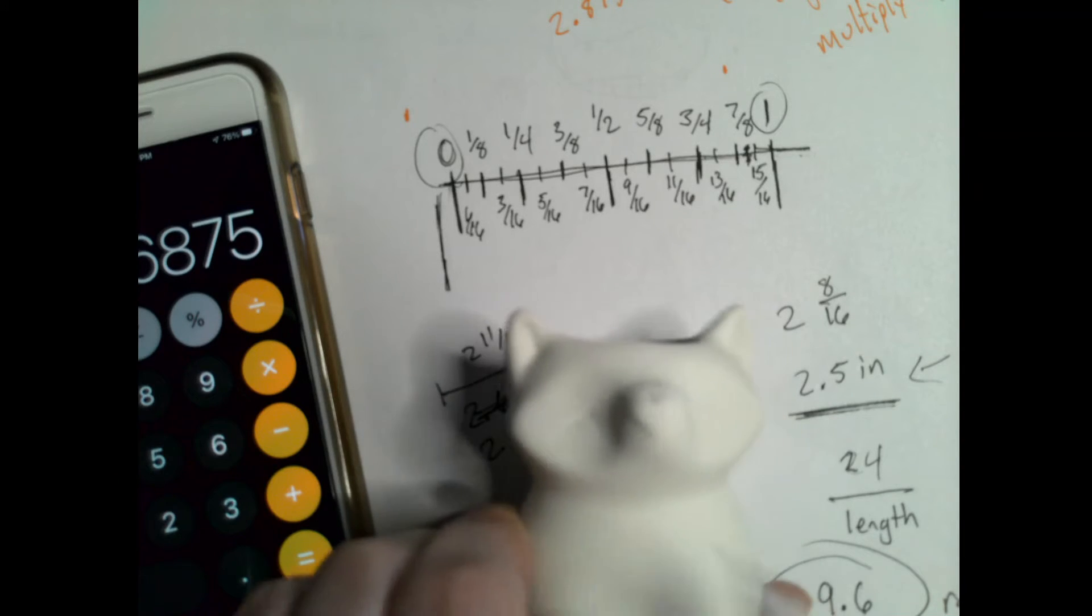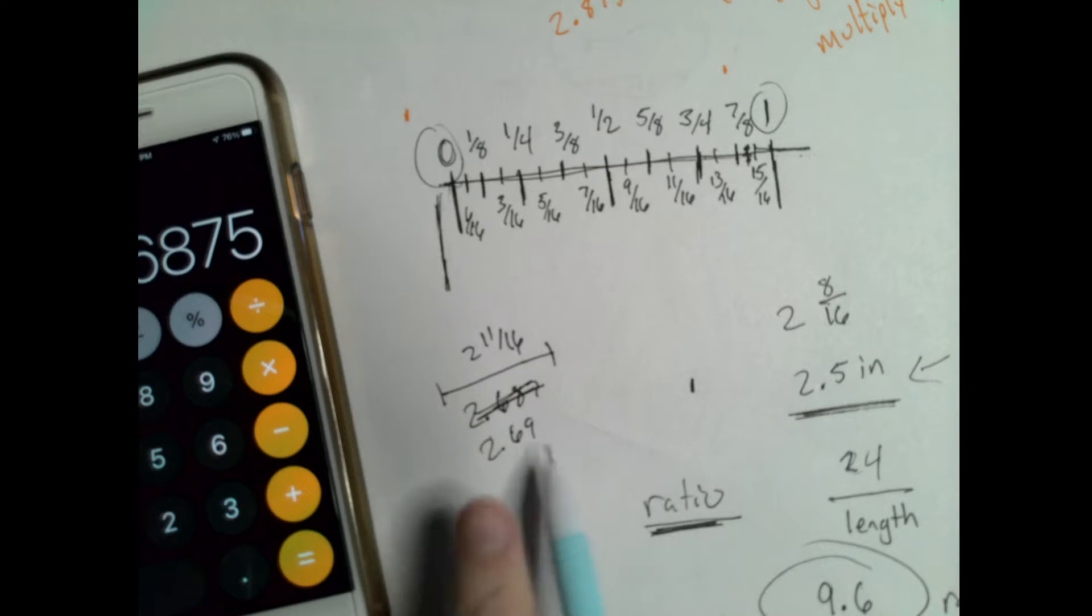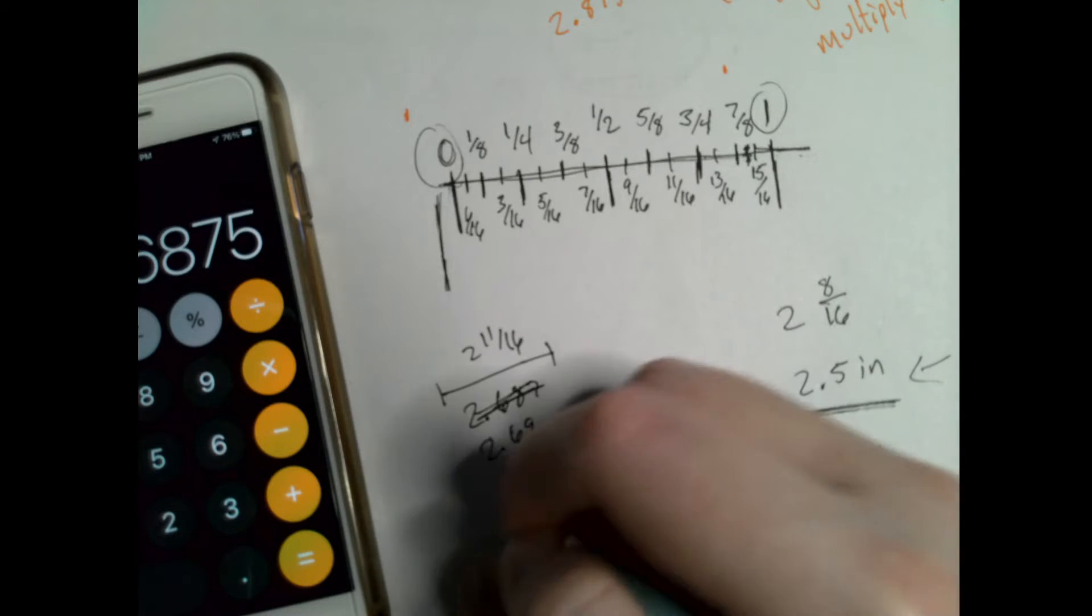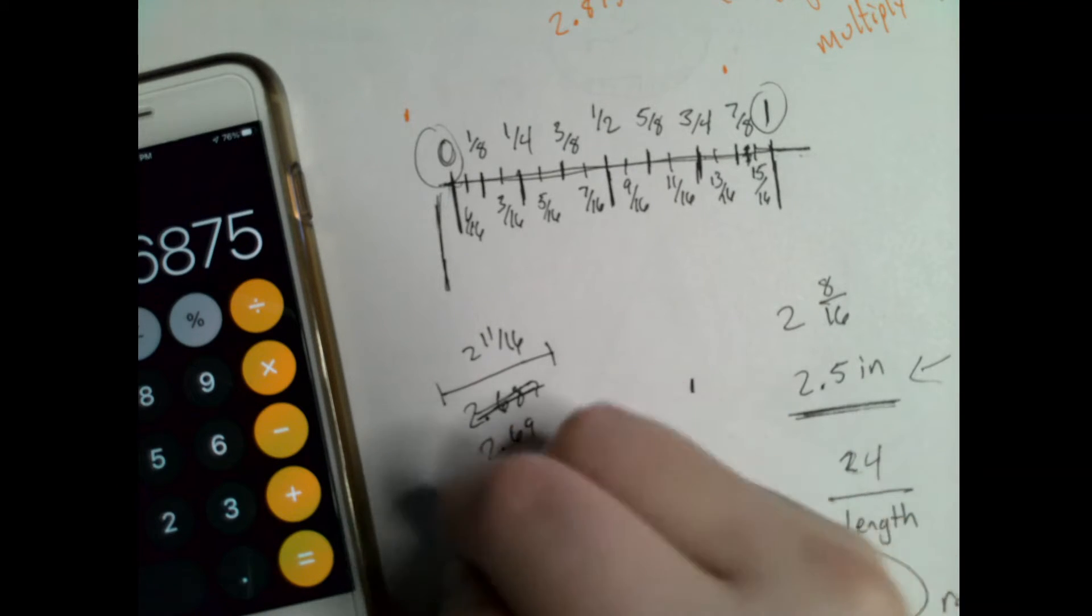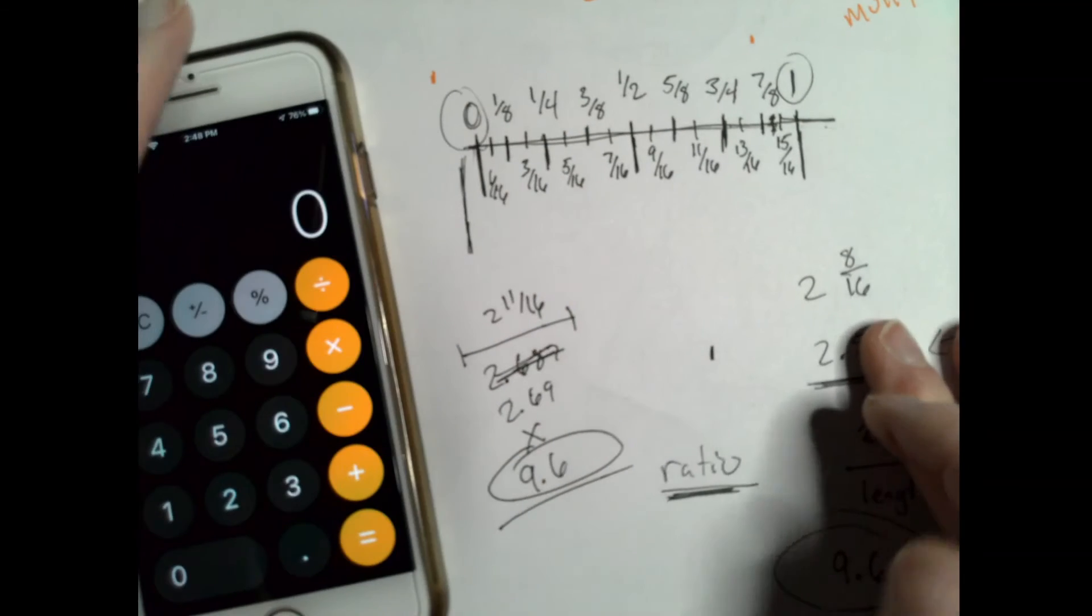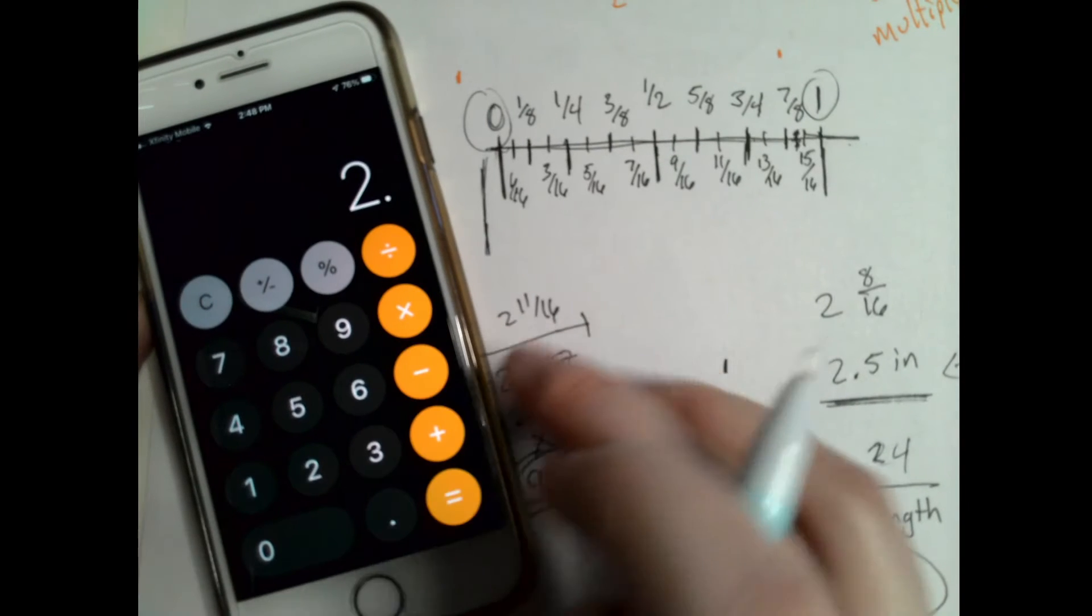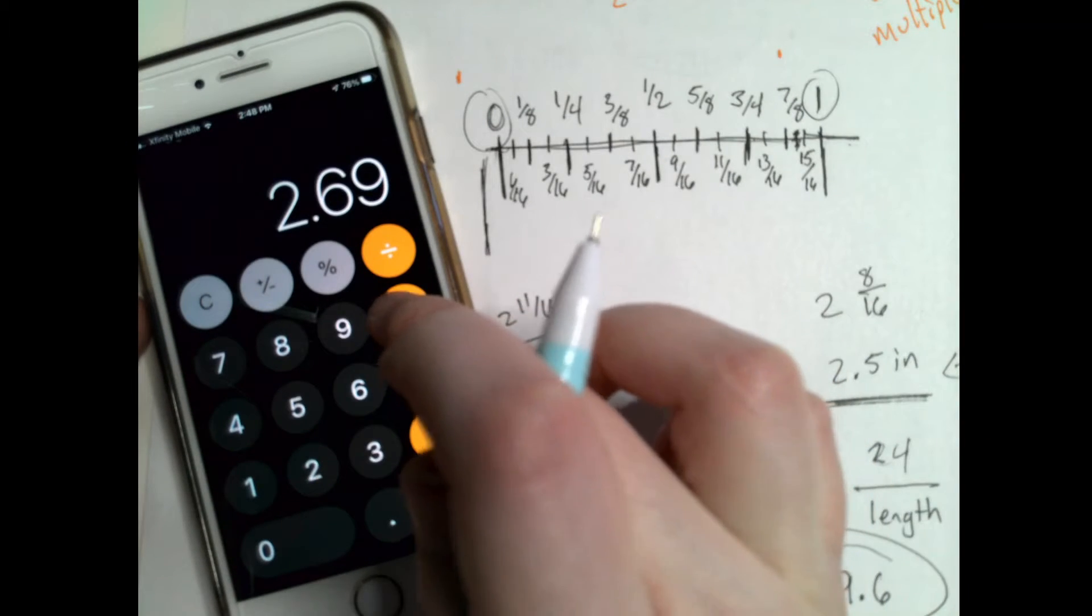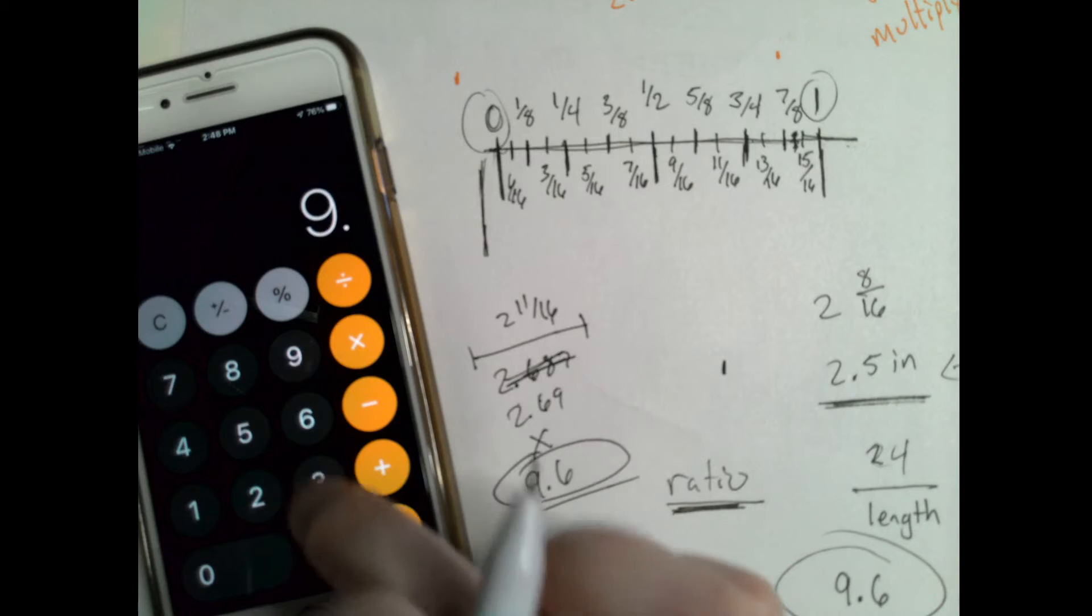So again, this is just across the face. I then have to multiply it by my ratio number, my magic number. So then my 2.69 multiplied with magic ratio.